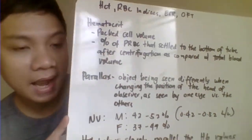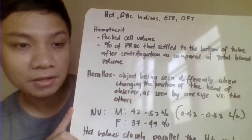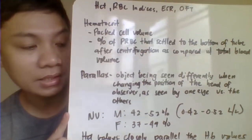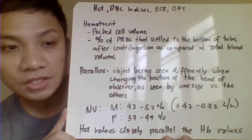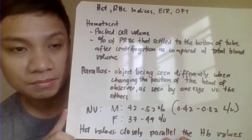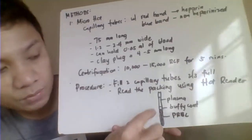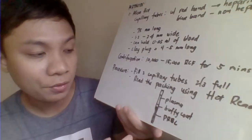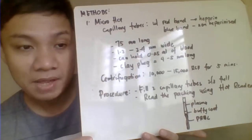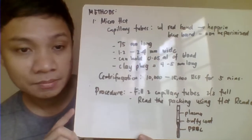The term 'parallax' is applied when reading the result of your hematocrit with a hematocrit reader. Parallax means seeing a different orientation of your object when you change the position of your head. So if you tilt your head while reading the PRBC level, you will get a different reading — that is called parallax.